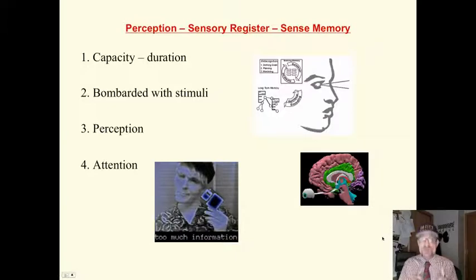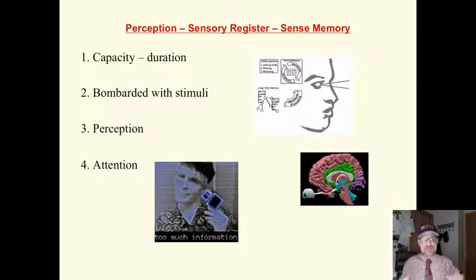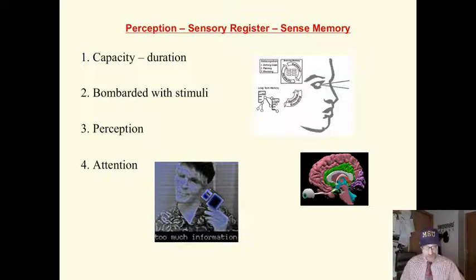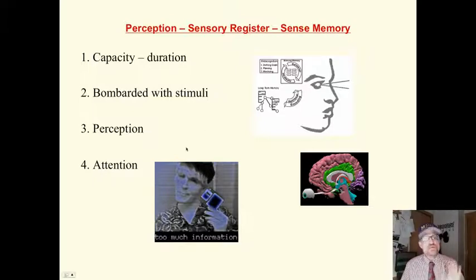Let's look at sense memory, the first part of this — it is perception, sometimes referred to as sensory register. The capacity of our sense memory is very large; we can sense a lot of stimuli, but the duration is very small, anywhere from one to three seconds. We are bombarded with millions of stimuli every day. We would go crazy if we tried to attend to all of them. Some young children need help here — they process too much stimuli. Stimuli are not only external; they are internal as well. You are attending to thoughts, emotions, memories, and past experiences. So we are bombarded — we have to make choices.